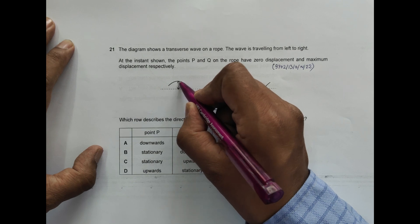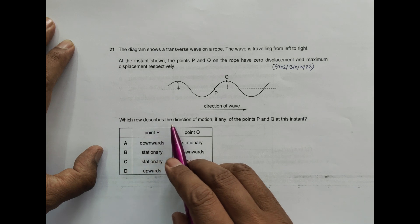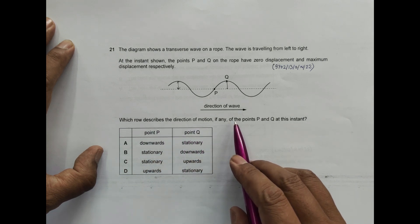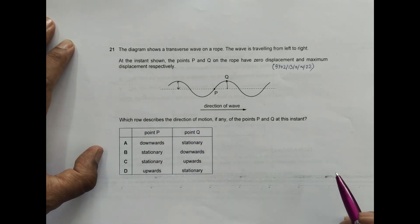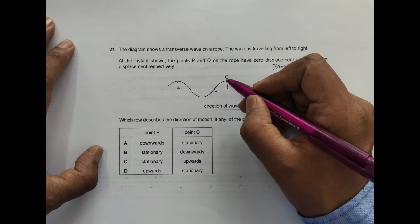Which route describes the direction of motion, if any, of the points P and Q at this instance? So we have to find the direction of motion of the points.